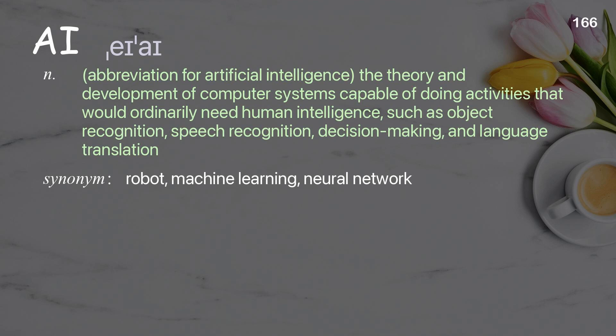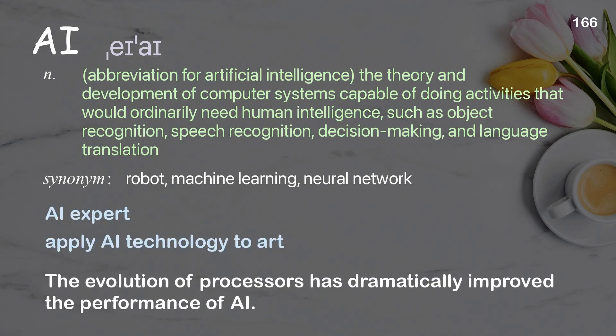AI: abbreviation for artificial intelligence; the theory and development of computer systems capable of doing activities that would ordinarily need human intelligence, such as object recognition, speech recognition, decision making, and language translation. Examples: AI expert; apply AI technology to art. The evolution of processors has dramatically improved the performance of AI.